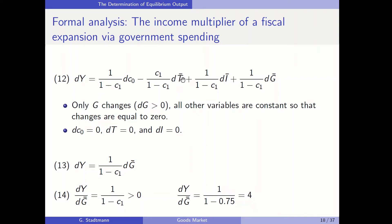Also the taxes are constant, therefore the change in taxes is equal to zero. Investment is constant and does not change, therefore the change in investment is equal to zero. Hence dc0 is equal to zero, dT is equal to zero, and dI is equal to zero. All three terms drop out and we are left with dY is equal to 1 over (1 minus c1) times dG.